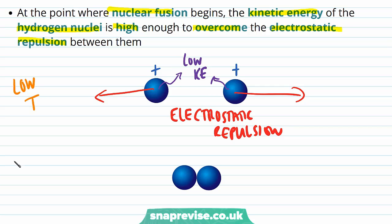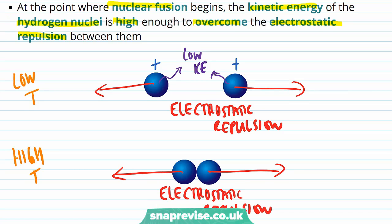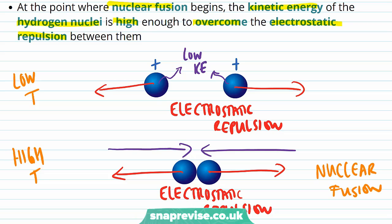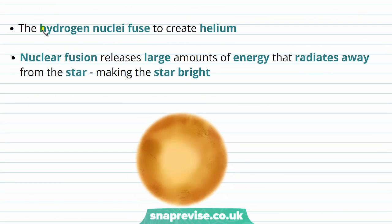However, if the hydrogen nuclei are taken to a high enough temperature, they're still going to be experiencing electrostatic repulsion. But if the temperature is high enough, the kinetic energy will be large enough to overcome this electrostatic repulsion and allow nuclear fusion to take place. These hydrogen nuclei fuse to create helium. Nuclear fusion releases large amounts of energy that radiates away from the star, making the star bright.